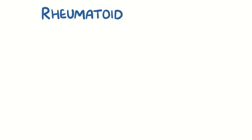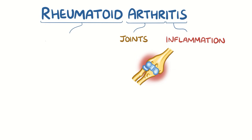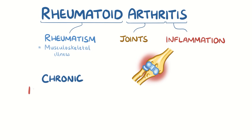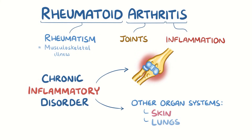In rheumatoid arthritis, 'arth' refers to joints, 'itis' means inflammation, and 'rheumatoid' comes from rheumatism, which more broadly refers to a musculoskeletal illness. So rheumatoid arthritis is a chronic inflammatory disorder that mostly affects the joints, but can also involve other organ systems, like the skin and the lungs as well.